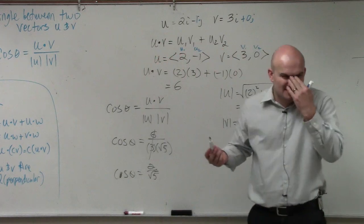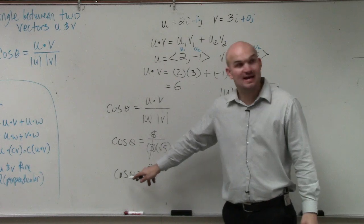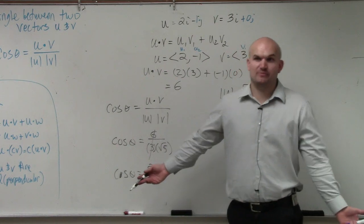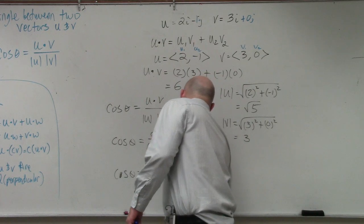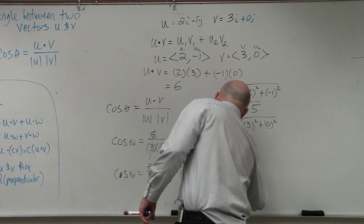Now, ladies and gentlemen, what are we asking, though? They're asking for the angle between two vectors, right? So we're looking for theta, correct? So how do we figure out what theta is? Cosine inverse. So you do theta equals cosine inverse of 2 over the square root of 5.